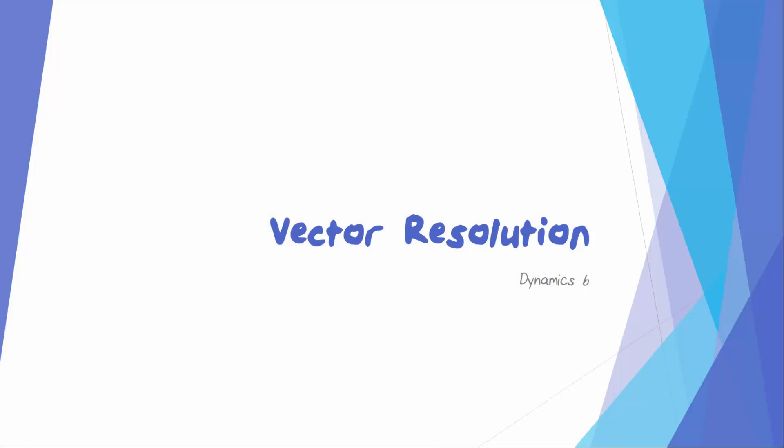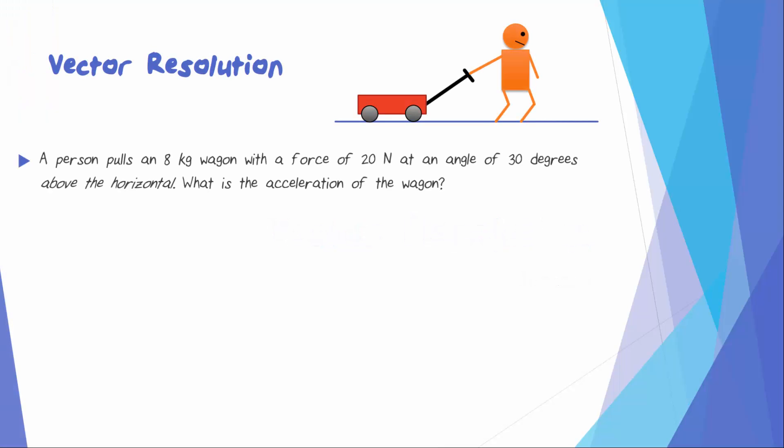This lesson is about vector resolution. Let's say that we have a person pulling an 8 kg wagon with a force of 20 N at an angle of 30 degrees above the horizontal. What would the acceleration of the wagon be?